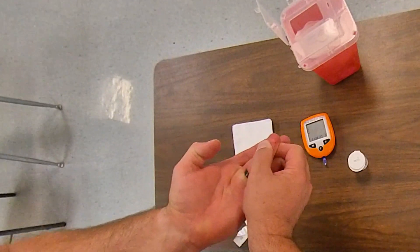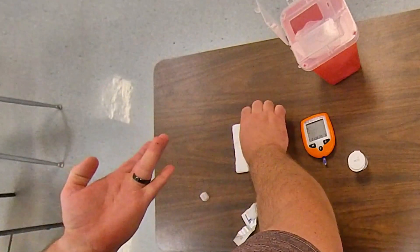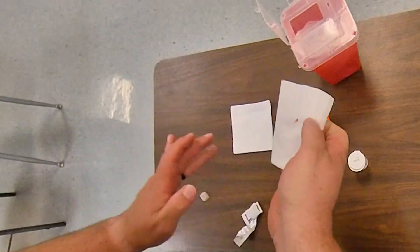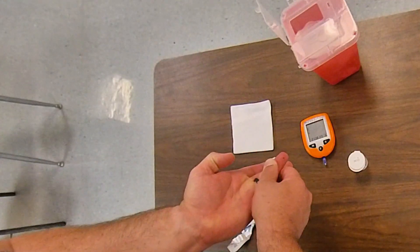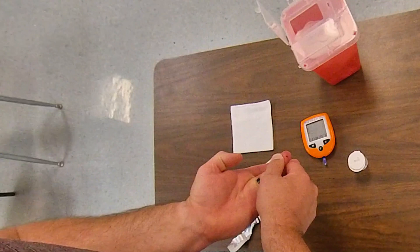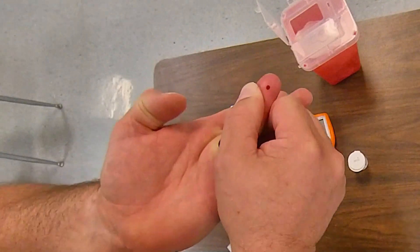Now I bleed a little bit out and then I use a 4x4 to wipe away the first drop of blood. Now to milk it, we start at the base of the finger and squeeze down until we can get enough of a drop and we don't need much, that's probably sufficient.